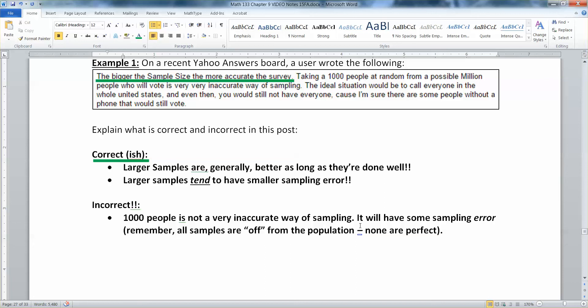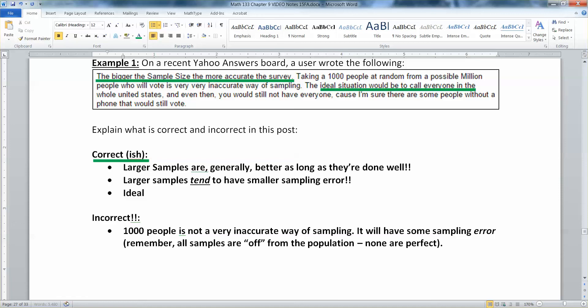Now the person is also right that the ideal situation would be to call everyone. That's called a census and that'd be perfect. But there are bigger problems with it than just people won't answer the phone or don't have phones. You can't get people on the line, you can't get a hold of everybody's phone number especially now that people have cell phones. The ideal situation is a census where you call everybody but you can't do it for a lot of reasons, not the least of which is not everybody will answer.